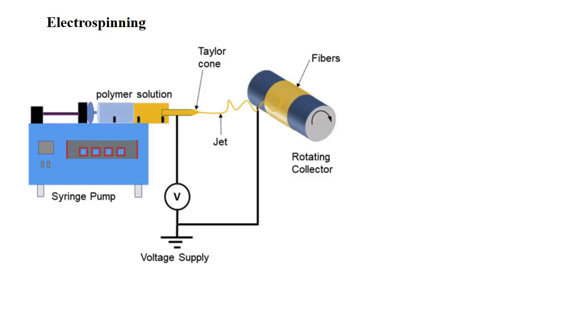This is electrospinning setup which consists of three main components like high voltage power supply, syringe pump with a metal needle and a conductive collector. So in electrospinning process which is classified into several techniques like vibration electrospinning, magneto-electrospinning, coaxial electrospinning and bubble electrospinning.